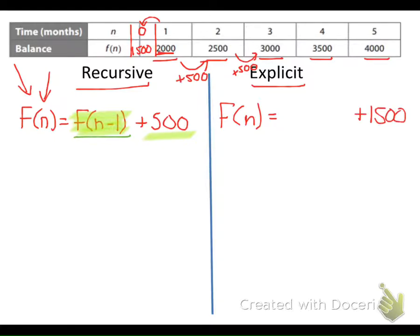If I'm writing my explicit rule, I basically want to backtrack and find the value of the term in the 0th position and start with that. Then we know that for each term we're adding 500. So it's almost like a rate of change problem—we're doing 500 times n plus the 1500 gives us our explicit rule.